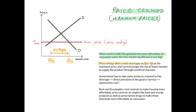The shortage at the maximum price can encourage the rise of black markets to supply the product through unofficial channels. The government then has to take some action to respond to this shortage, perhaps through direct provision of the good or service. This entails an opportunity cost because the government uses tax revenue to directly provide the good or service, and that tax revenue could have been used elsewhere.